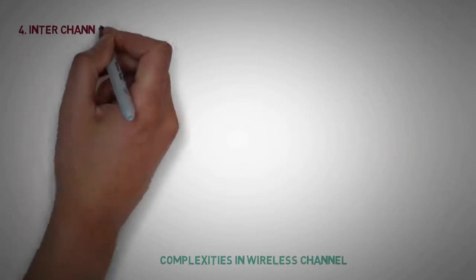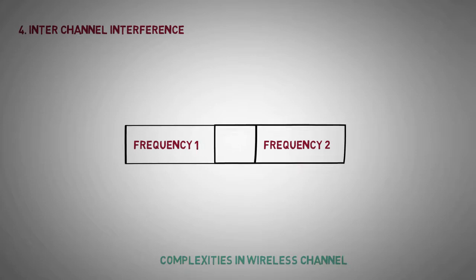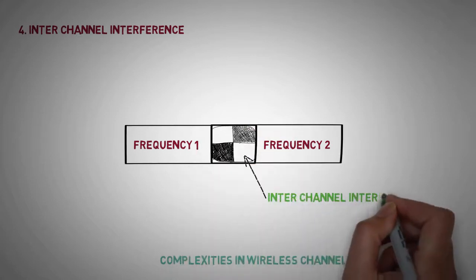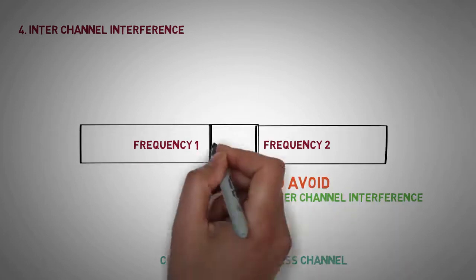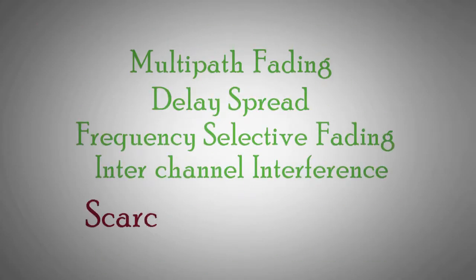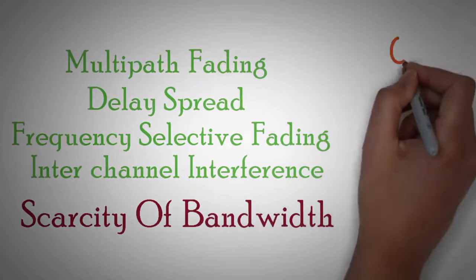Inter-channel interference: Often signal bandwidth of adjacent carrier frequencies overlap with each other, giving rise to inter-channel interference. Guard bands were introduced to avoid inter-channel interference. All these limitations compounded with the scarcity of bandwidth gave rise to multiple access techniques.